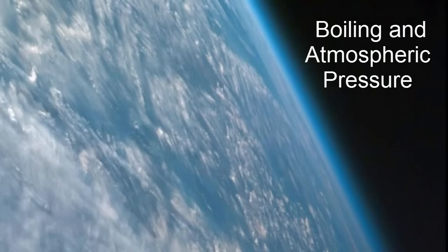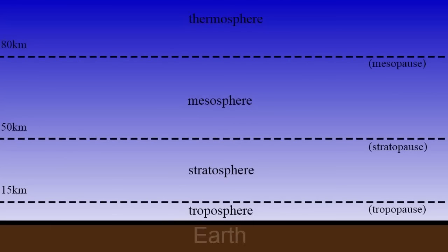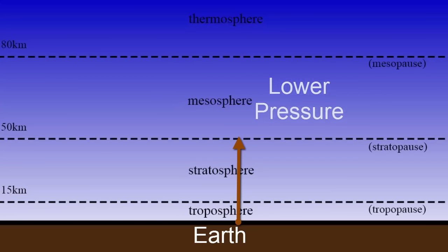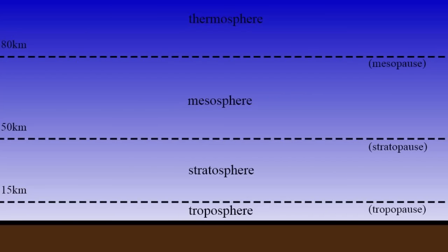Boiling depends on the amount of pressure around the liquid. On Earth, the atmosphere is what creates this pressure. If we look at a cross section of the atmosphere, only 50 kilometers has enough air for humans to breathe. The pressure also decreases as we go higher, because as we go higher in the atmosphere, there are fewer air molecules.